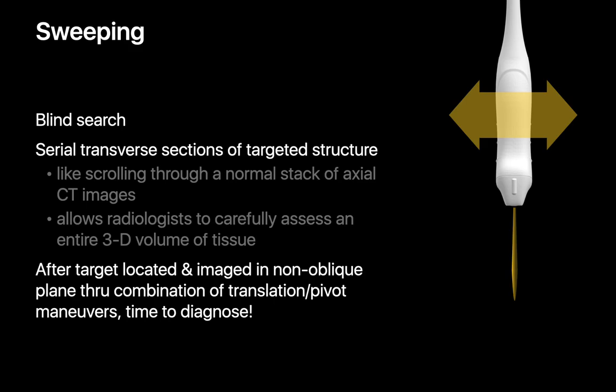Each of the six ultrasound probe motions can help accomplish different goals when you're scanning a patient. Sweeping is generally used for blind searches. The best analogy is on CT when we're scrolling up and down through a stack of axial CT images to look for something in the CT volume. If we find something during our sweep, we'll usually need to use other probe motions to investigate that finding.